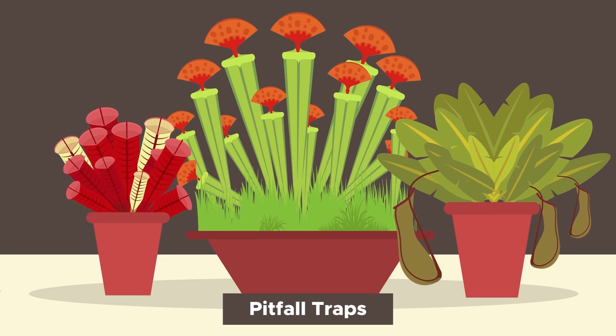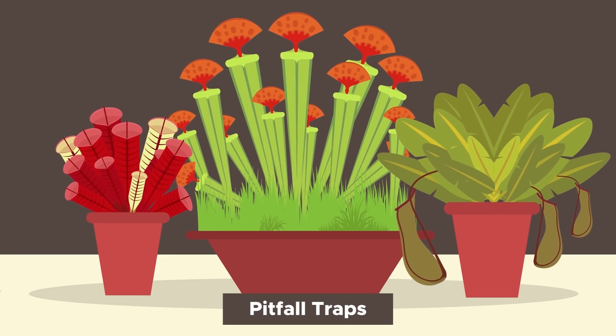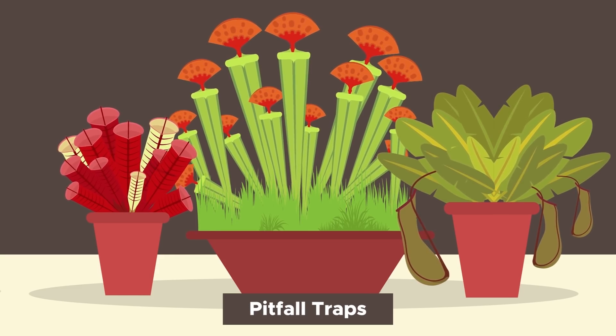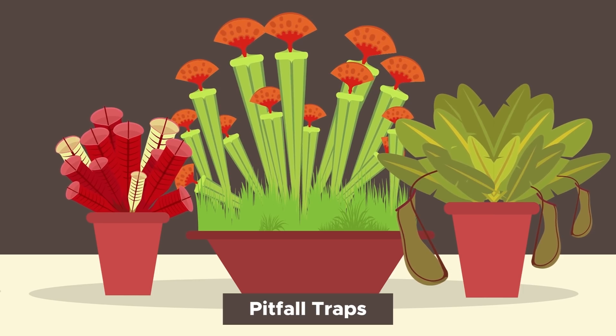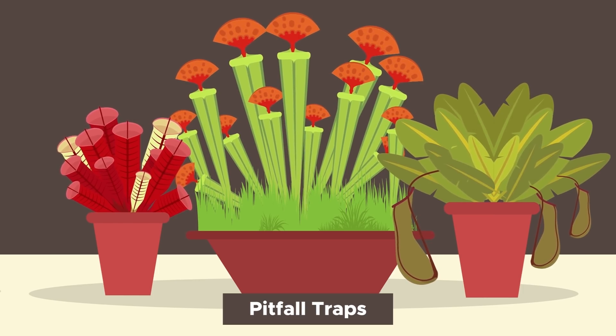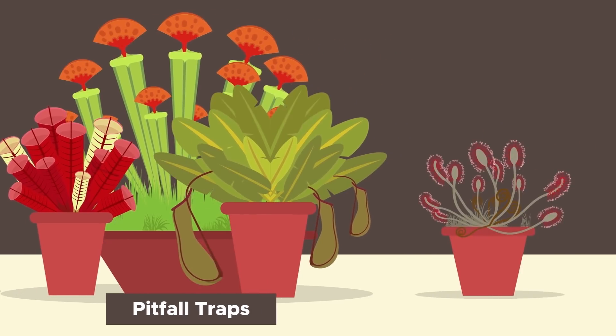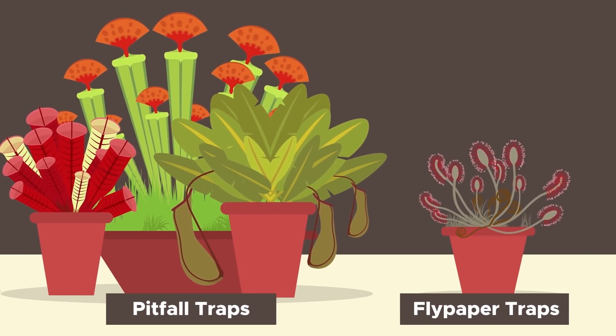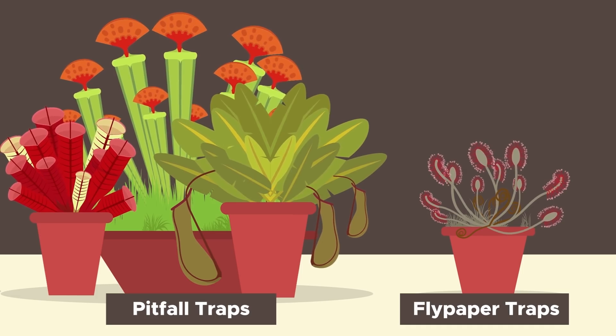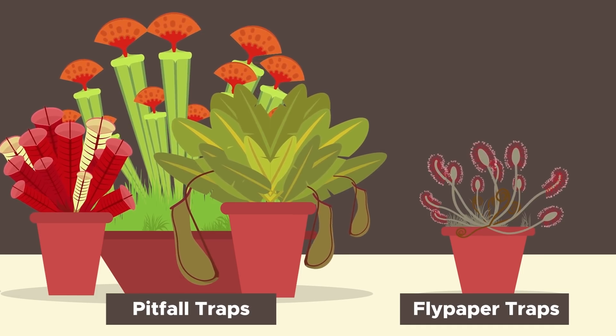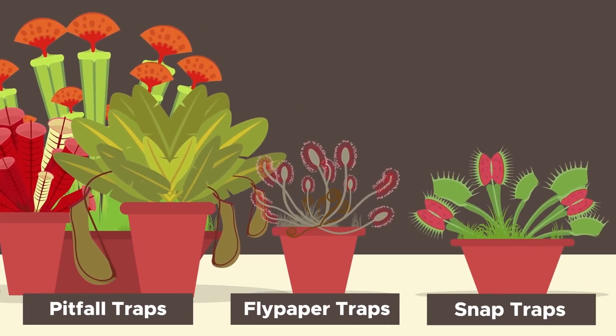Pitfall traps use the simplest method, a vertical tube that fills with water and drowns anything that falls into it, which are sometimes even relatively large animals like rats and frogs. Flypaper traps utilize sticky mucilage to catch insects that come into contact with it. And then there are the snap traps, the most advanced of all carnivorous plants.